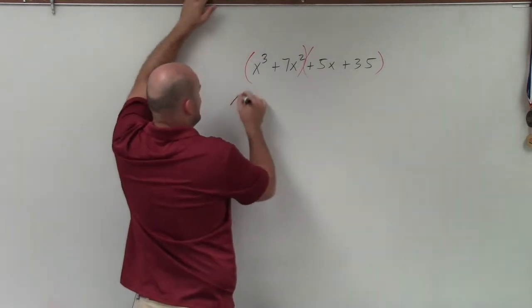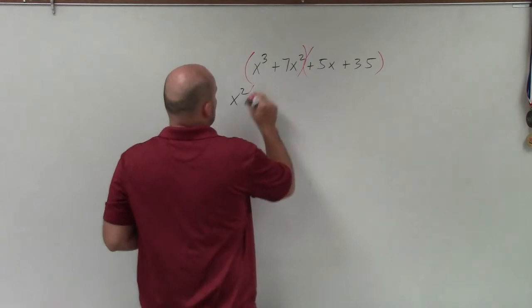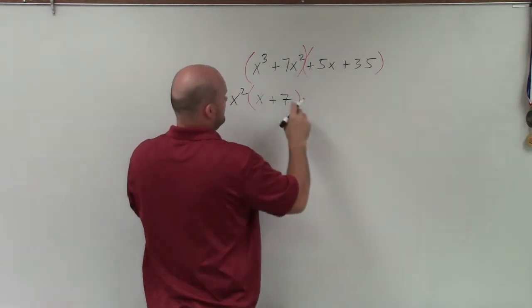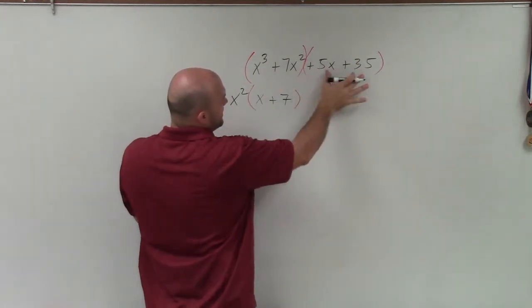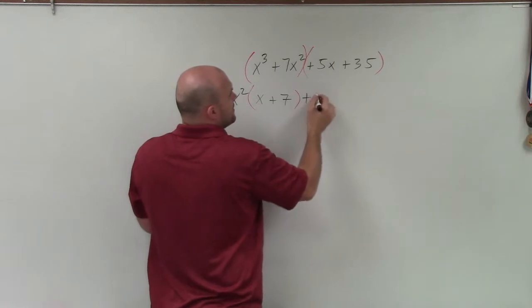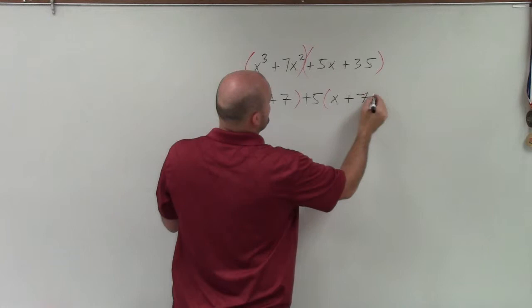That's the only term I can factor out. So I write x squared. Let's go back to this. So when I factor out an x squared, I'm just left with an x plus 7. Then I look at this one and say, all right, what can I factor out over here? Well, I can factor out a positive 5. So when I factor out a positive 5, I'm left with an x plus 7.